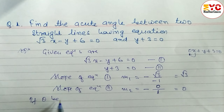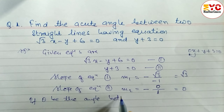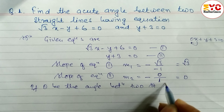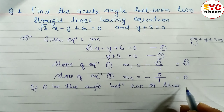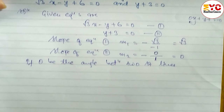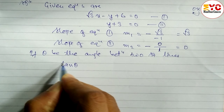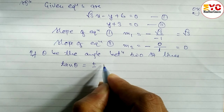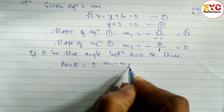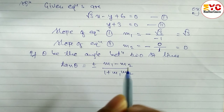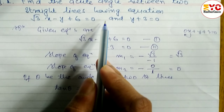So if theta is the angle between two straight lines — equation 1 and equation 2 — the formula to find theta is: tan theta is equal to plus or minus m1 minus m2 divided by 1 plus m1 times m2. But what we have to find out is the acute angle.